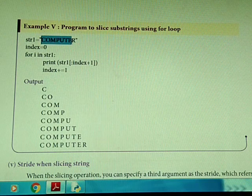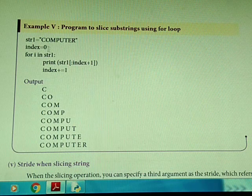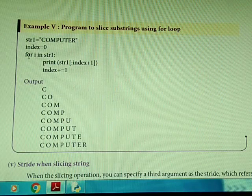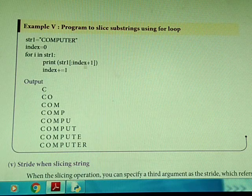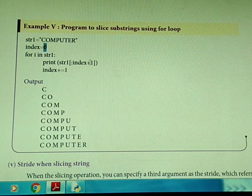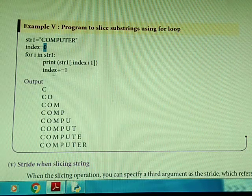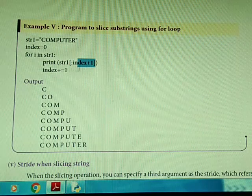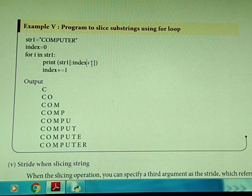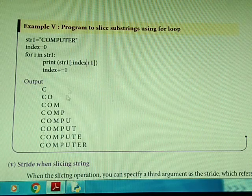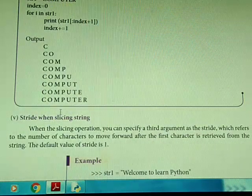See the example program to slice substrings using a for loop. The string is 'computer'. For each character in string1, starting from the first letter 'c', we increment the index: index plus 1, so 0+1, 1+1, 2+1, 3+1, 4+1, and so on. This way, we can iterate through each character.